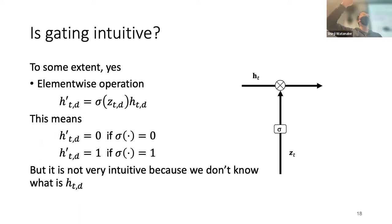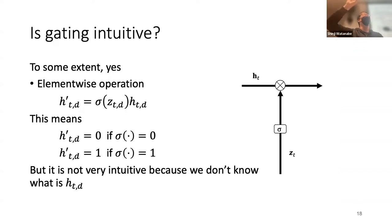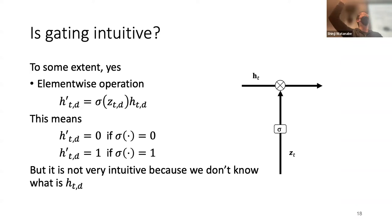If gating is a scalar it is super intuitive: completely zero means no past information passes, completely one means all information passes, and 0.5 means half the information passes. However, gating is actually applied element-wise for each dimension, which makes the intuition a little more difficult. But remember that if all elements of the gate are one, the information passes; if all elements are zero, the information is completely cut.